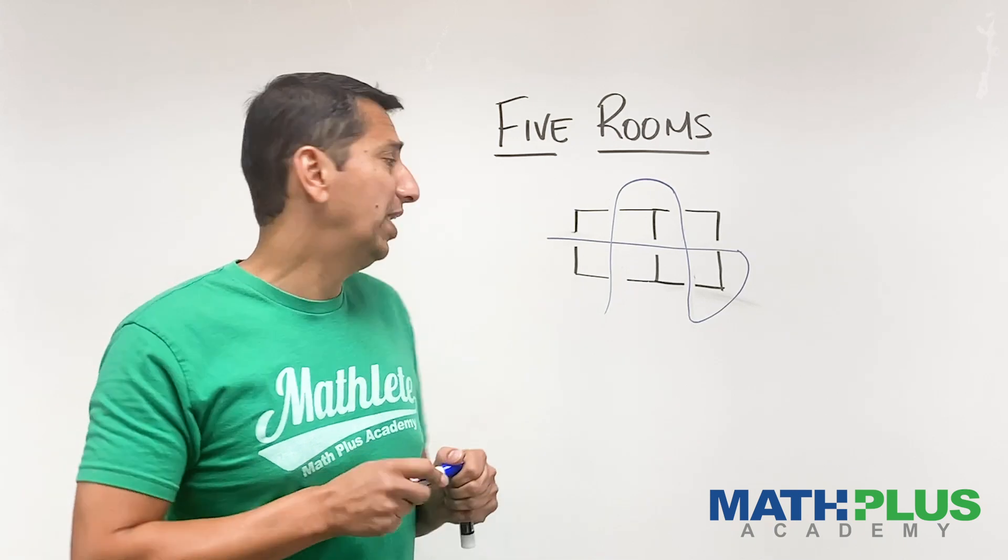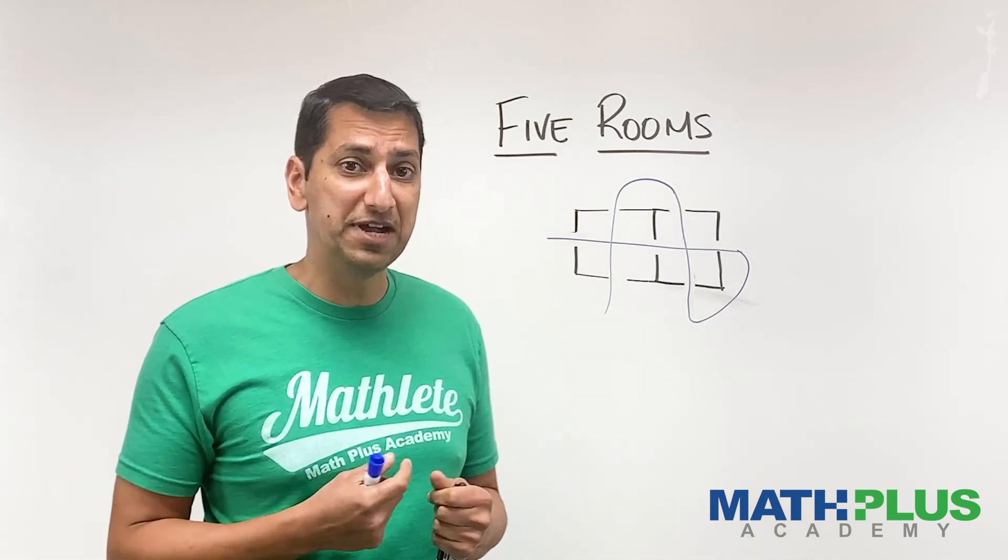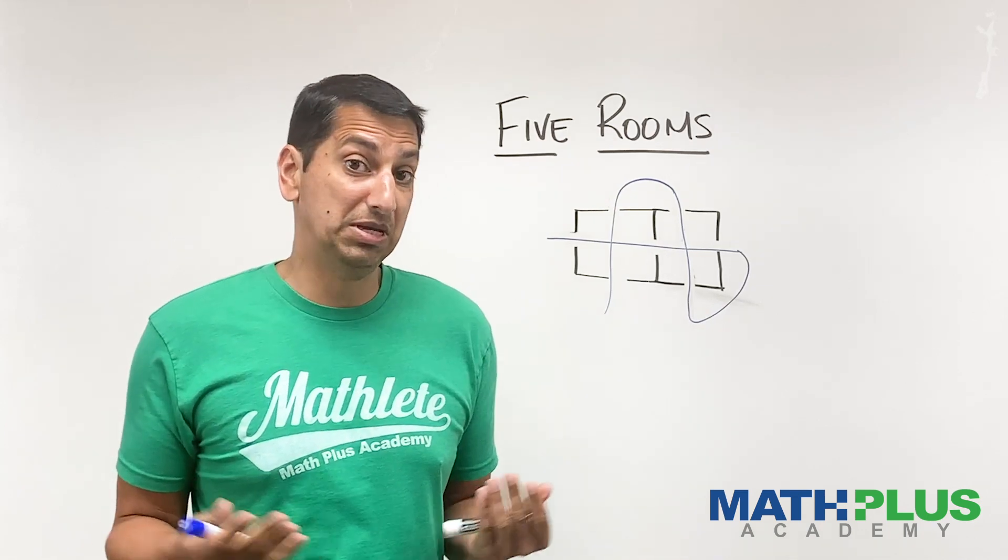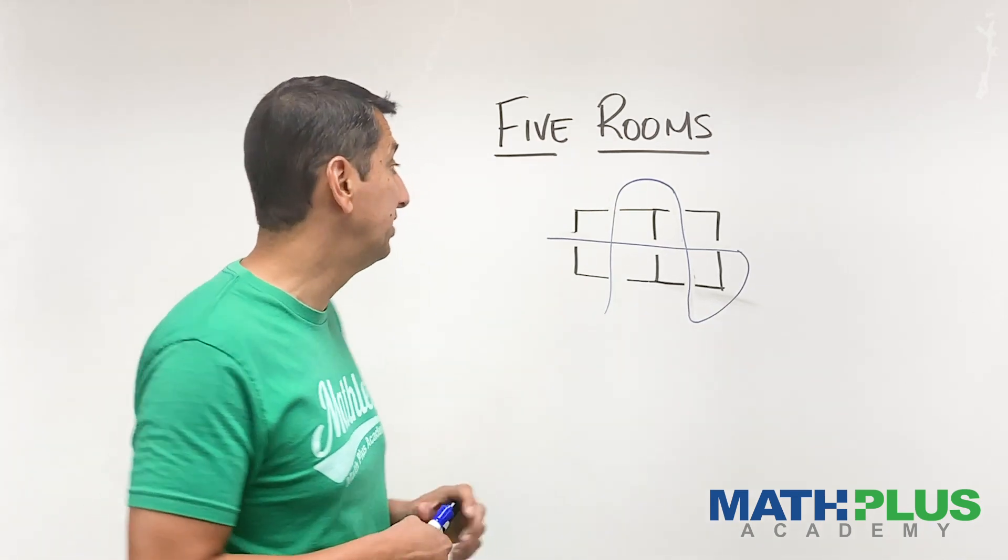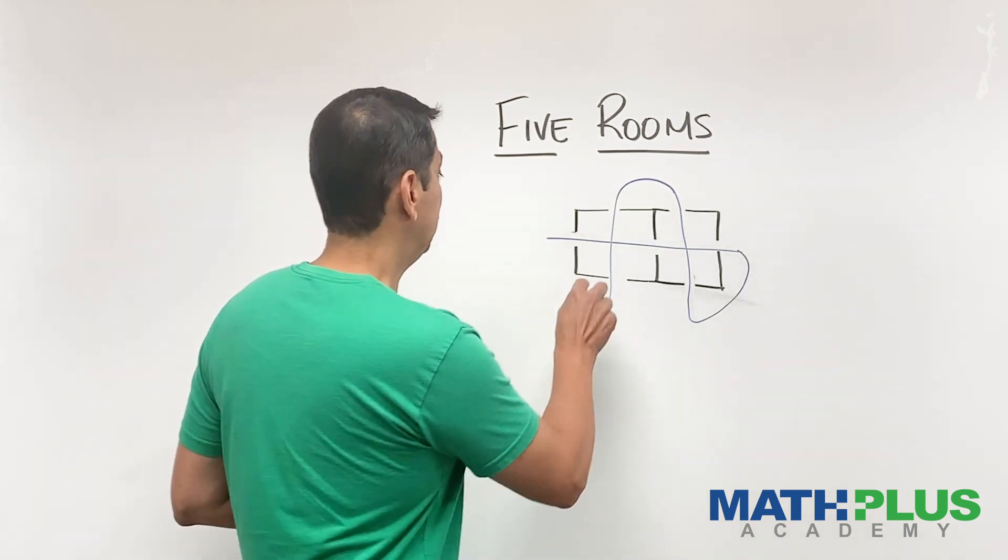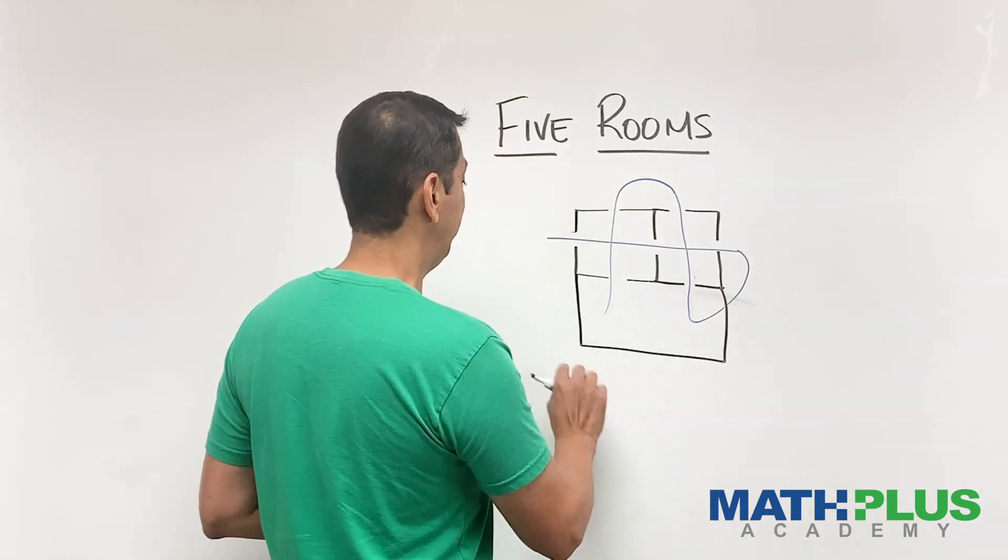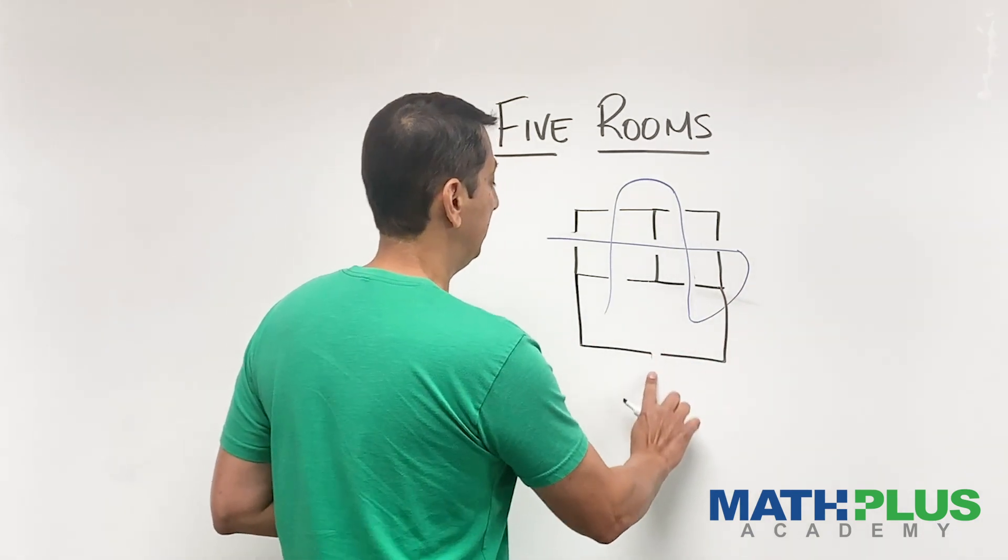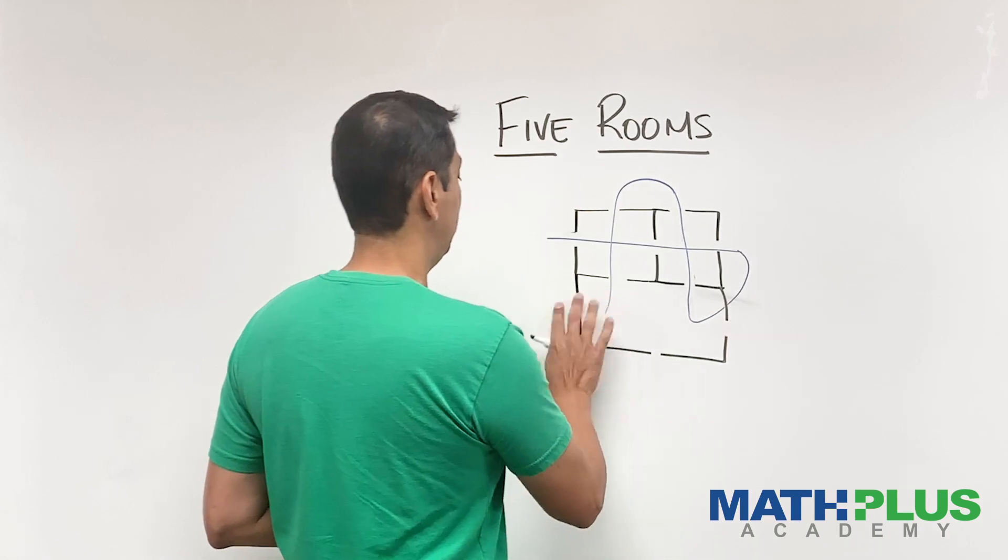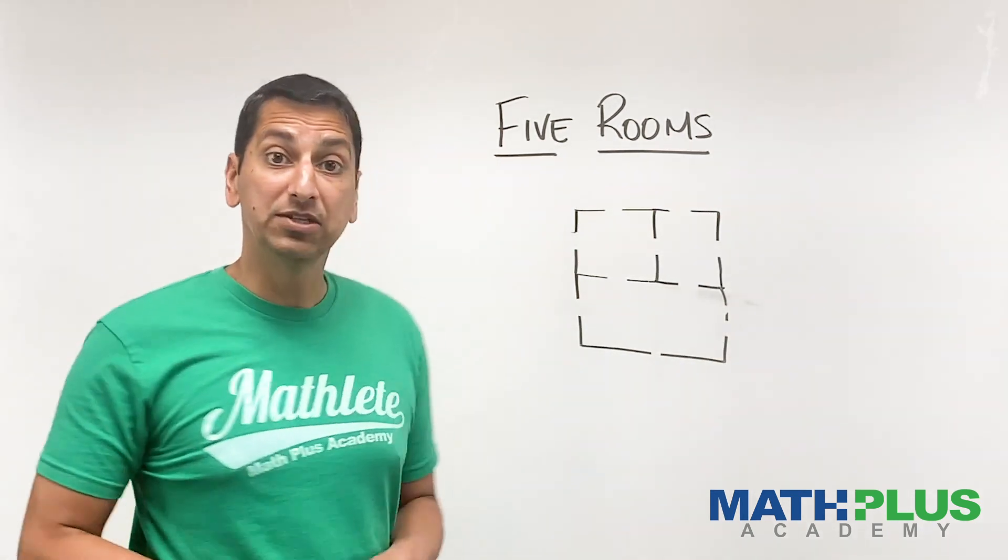Now, I'm wondering, could I close some of these walls or add a room somewhere that would make this not solvable? Can you make one that can't be solved? Let's see. What if I add another room? I'll just add a big room on the bottom, and then I'll have to add a door here in the bottom, and on the side, and on this side. So let me give this a shot.